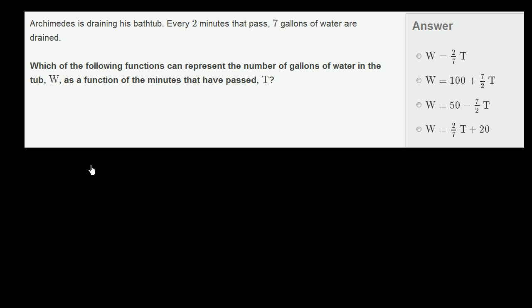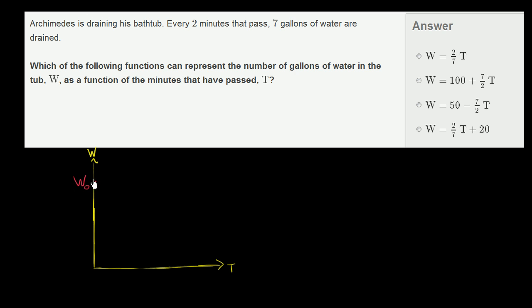So let's think about this visually. Let's plot the number of gallons of water we have on the vertical axis — that is a function of time. As time passes, we will lose water at a fixed rate, so this is our time axis. We're going to start with some initial volume of water in the tub, and they don't tell us what that initial volume is, so let's just call that W sub zero — the initial number of gallons, or the number of gallons at time equals zero.